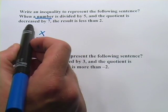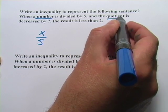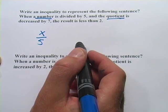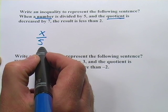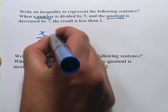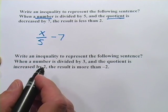And the quotient is decreased by 7. And what that means, a quotient is something that's getting divided by, so it's this whole thing that's going to be decreased by 7. So I can put my minus 7 right after it like that.